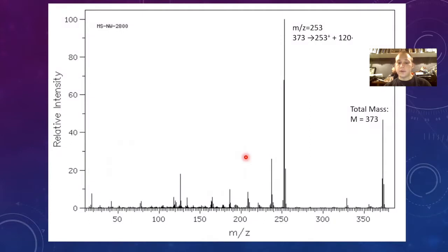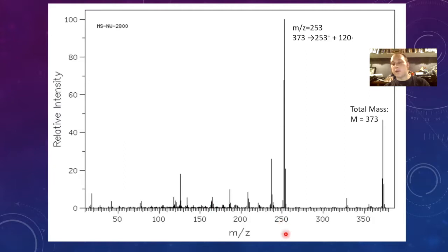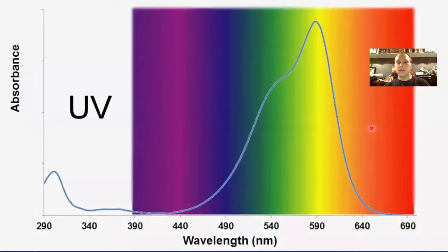So this is our first spectroscopy result we're going to look at with this molecule. Two peaks really stand out here. The first is a mass-to-charge ratio of 373. This is coming from a bit of an older machine where this was initially published, so it doesn't have the data for smaller ions or rather a more precise measurement — that's what I mean. But the 373 is the total mass of the whole molecule.